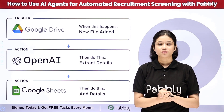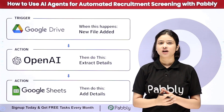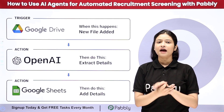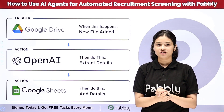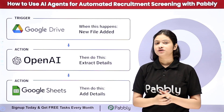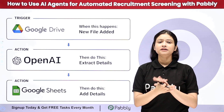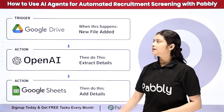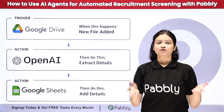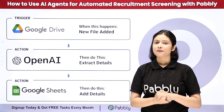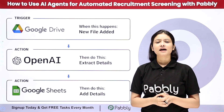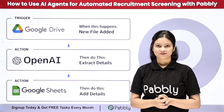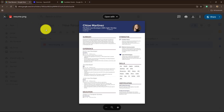Every time a new resume is uploaded in the folder of my Google Drive, the details will be extracted out and the decision will be made with the help of AI agent, and the details will finally be added in my Google Sheets for final review. To automate this entire process I am not going to use any coding or programming skills — I will simply be connecting all these applications with the help of Pabbly Connect. Welcome to my screen everyone, in this video we are going to learn step by step how to automate resume screening with the help of AI agent.